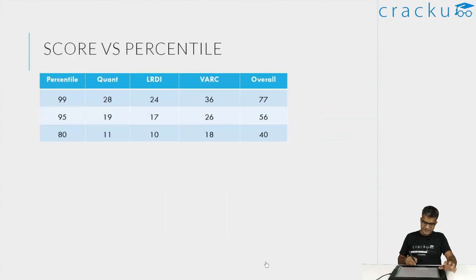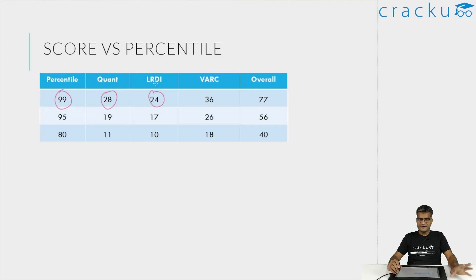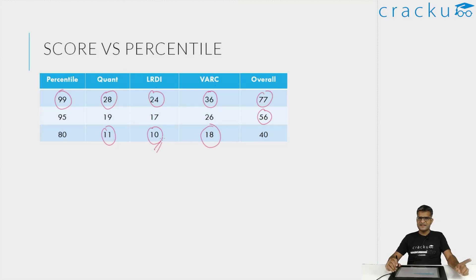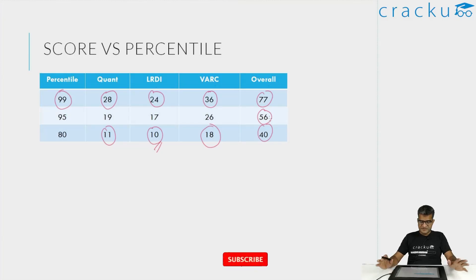Let us now look at the expected percentiles. For 99 percentile in quant, I think it was around 28 marks. LRDI at 24 marks, that is getting 8 questions correct. VARC at 36 marks. Overall is 77 for 99 percentile. For 95 percentile, roughly around 9 to 10 marks lesser per section and around 20 marks lesser overall. For 80 percentile, around 11 marks in quant, 10 marks in LRDI, and VARC around 18. If you get one LRDI set correct — that is 12 marks — you will clear the cutoff. Overall 80 percentile will be around 40 marks. I hope this was useful. If you have any doubts, please comment below this video.